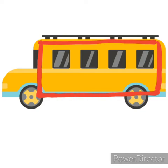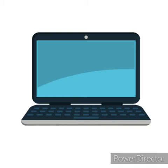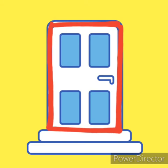Let us see another picture — this is a bus, and the shape of a bus is rectangle. Now what is this? This is a laptop, and the laptop is rectangle in shape. Our last picture is a door, and a door is also rectangle in shape.